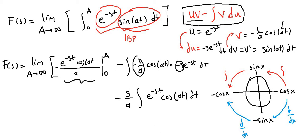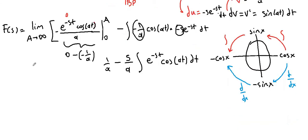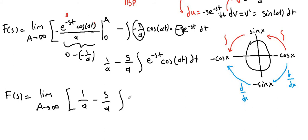Plugging in the upper boundary of infinity: e to the negative infinity is 0, and 0 times anything is 0, so the upper boundary term is 0. Plugging in the lower boundary of 0: e to the 0 is 1 and cosine of 0 is 1, so negative 1 times 1 gives negative 1 over a. Negative times negative gives positive 1 over a. Cleaning up, f of s equals the limit as A approaches infinity of 1 over a minus s over a times the integral of e to the negative st times cosine of at dt.